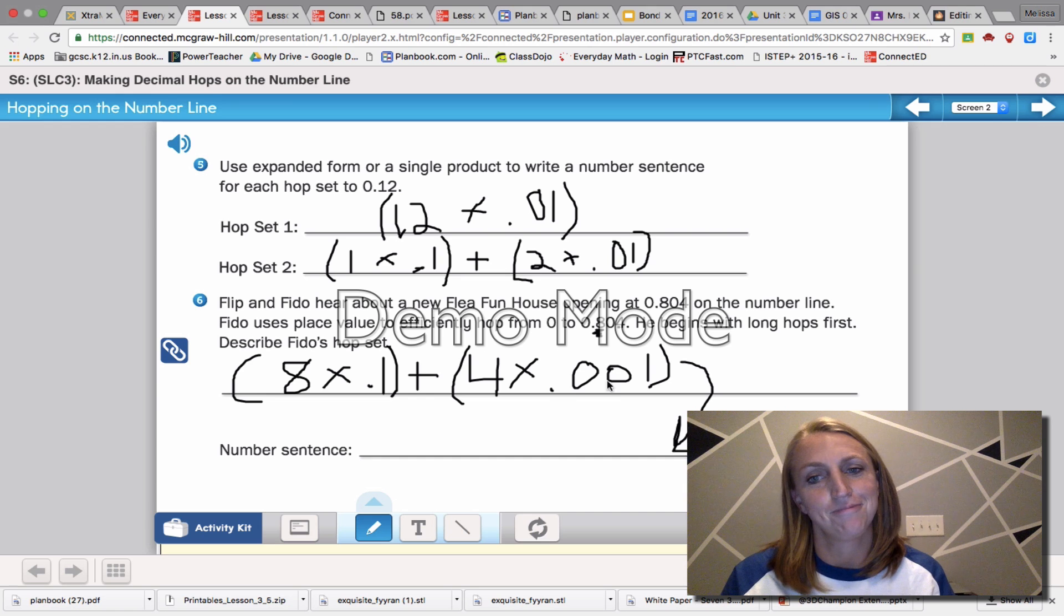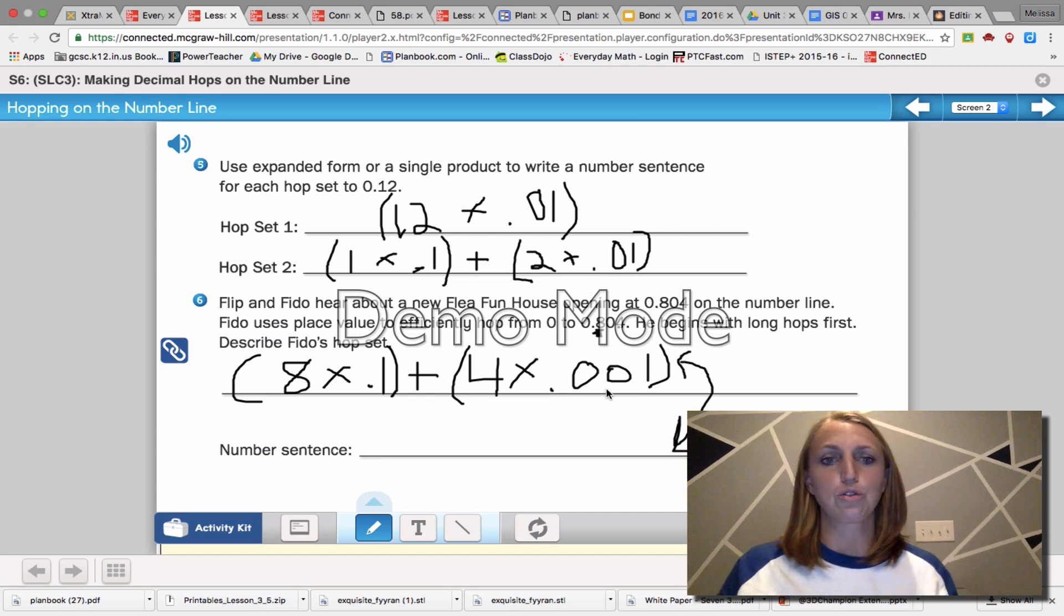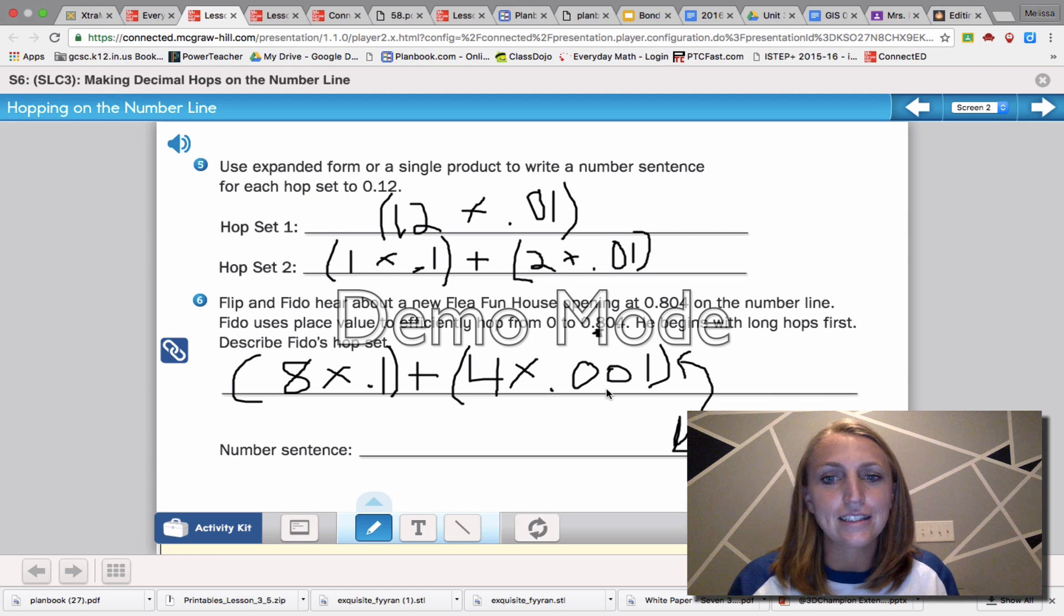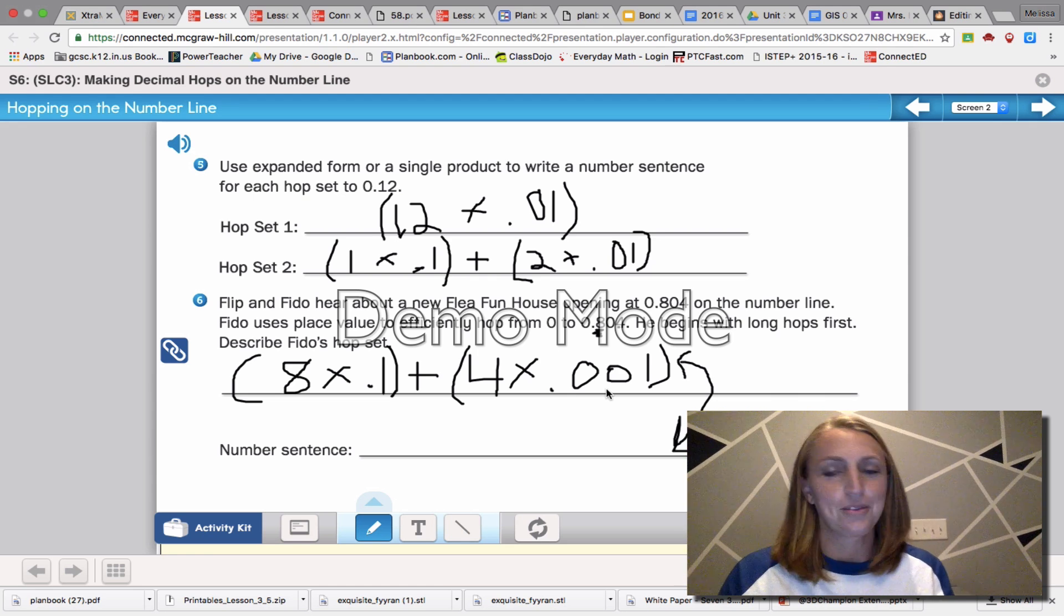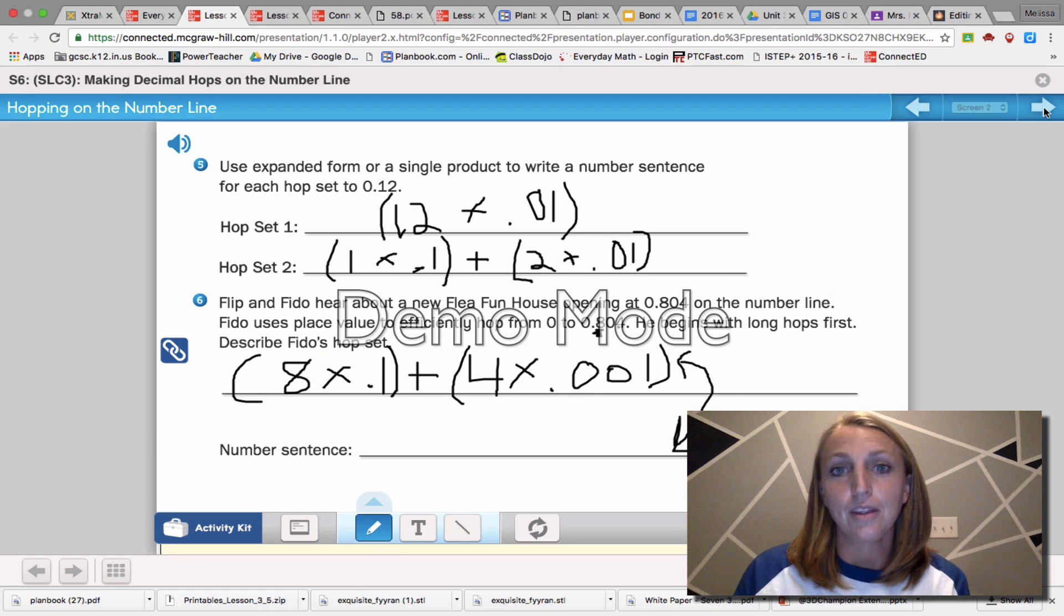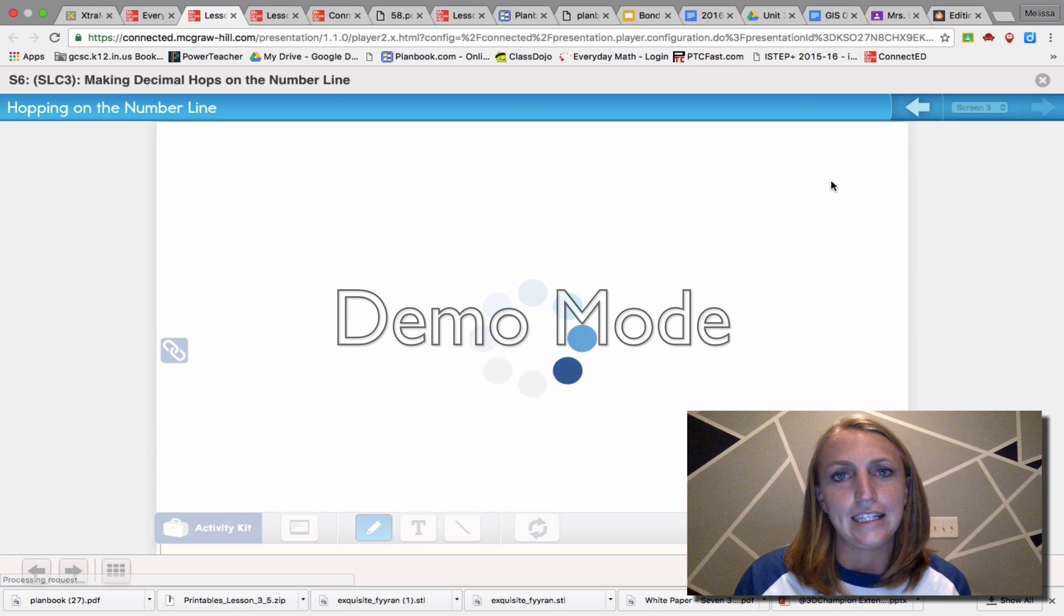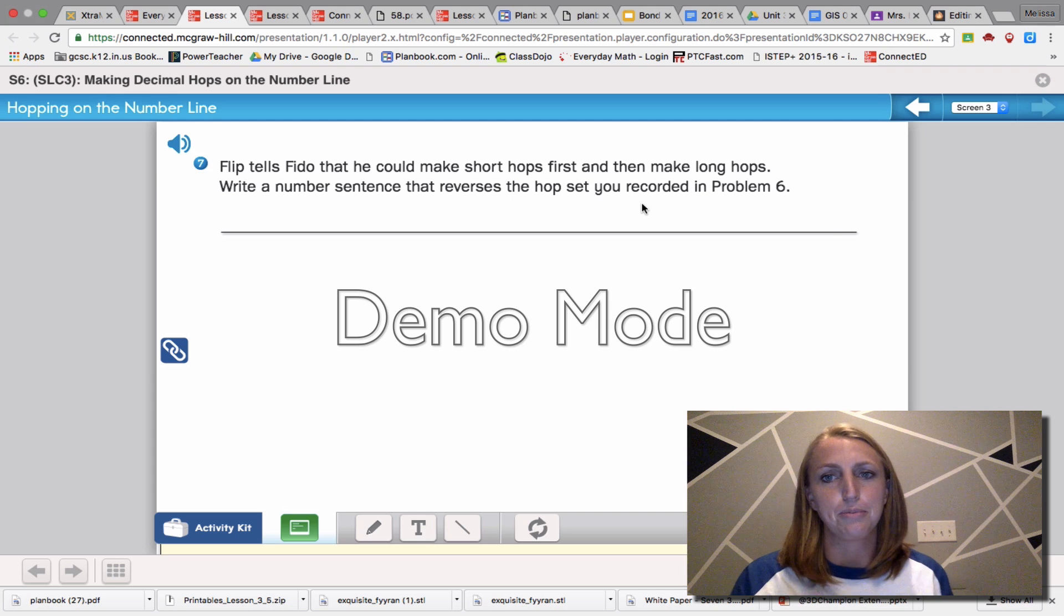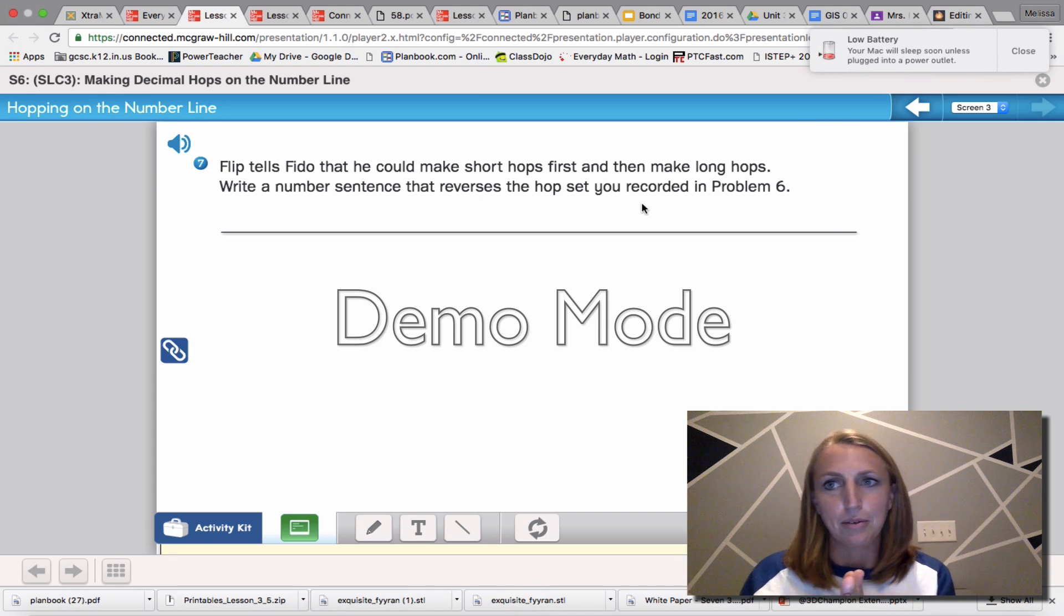This would be your number sentence. If I were going to describe his hop set he would make eight hops at one-tenth and then four little tiny hops at one one-thousandth. My children are watching me. Well friends it is time for you to answer this one on your own. Write a number sentence that reverses pretend you went the short ones first and then you went the big ones.